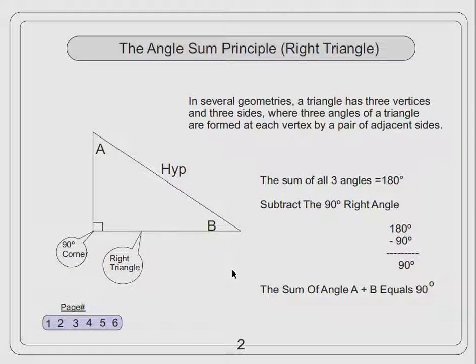So if we know that the sum of all three angles is 180, and we subtract this 90 degree corner down here, then we are left with a 90 degree value divided up between angle A and angle B.